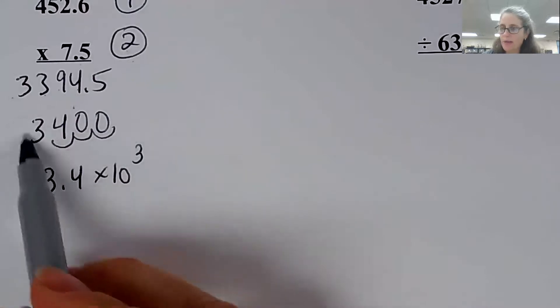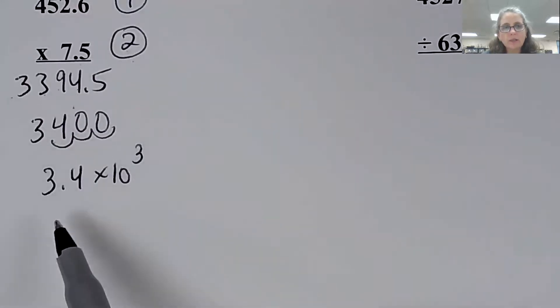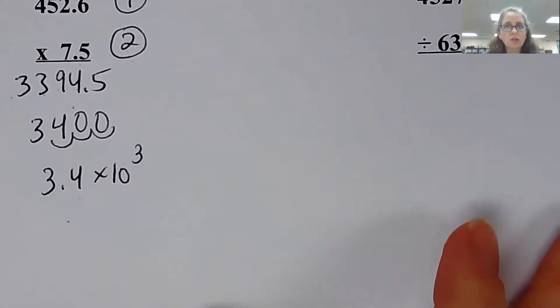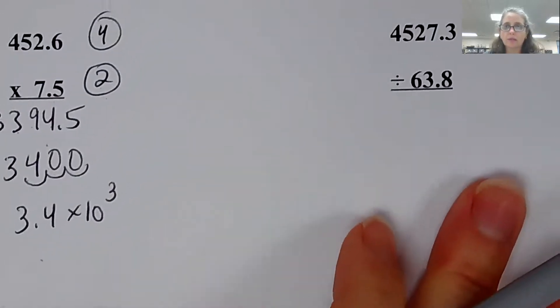And they're like 3.4 times 10 to the third as your final answer. So if the zeros bother you, or they kind of trick your brain a little bit, write everything in scientific notation, and I will give you full credit because the three and the four are two significant digits.